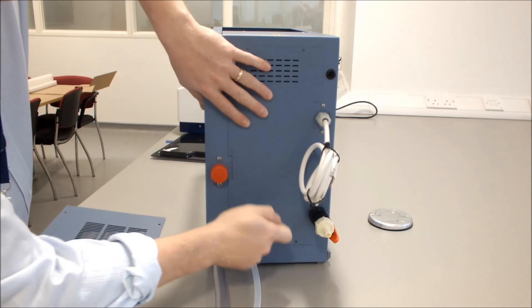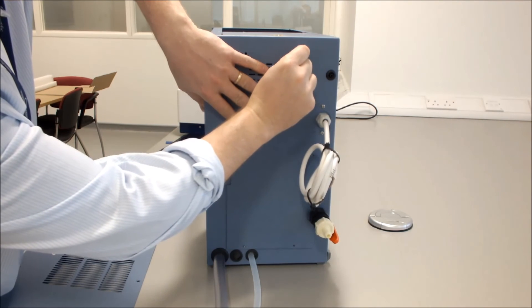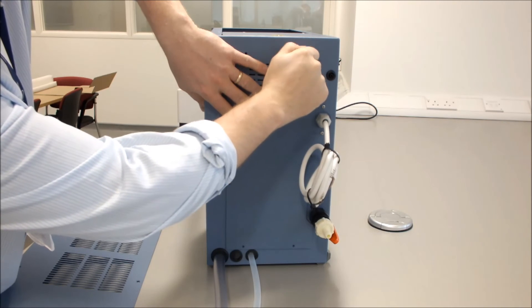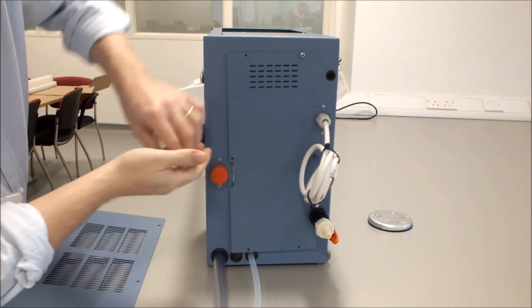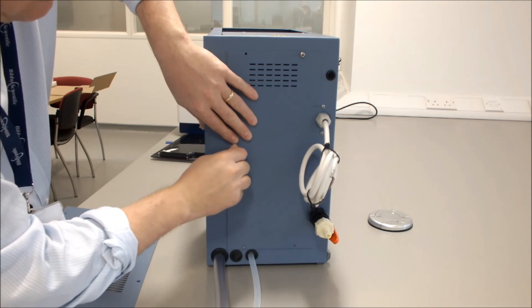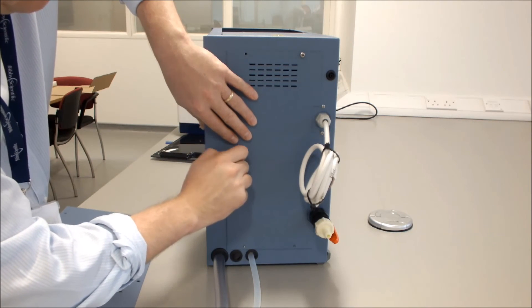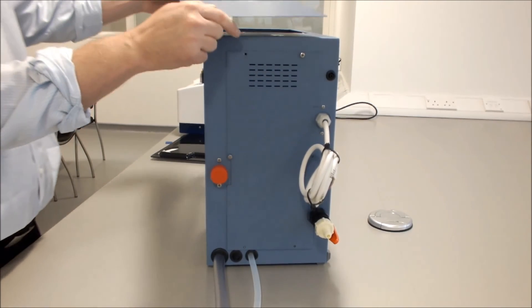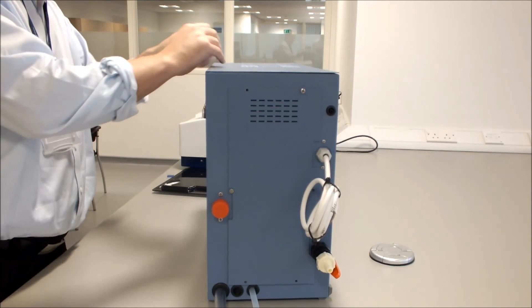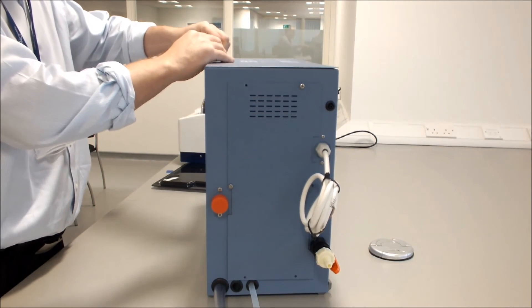Our side panel can then be connected back up using the six screws. For the purpose of this demonstration, I will only put two screws in. Our lid can also be fitted at this stage. Again, I will just put one screw in just to hold it.